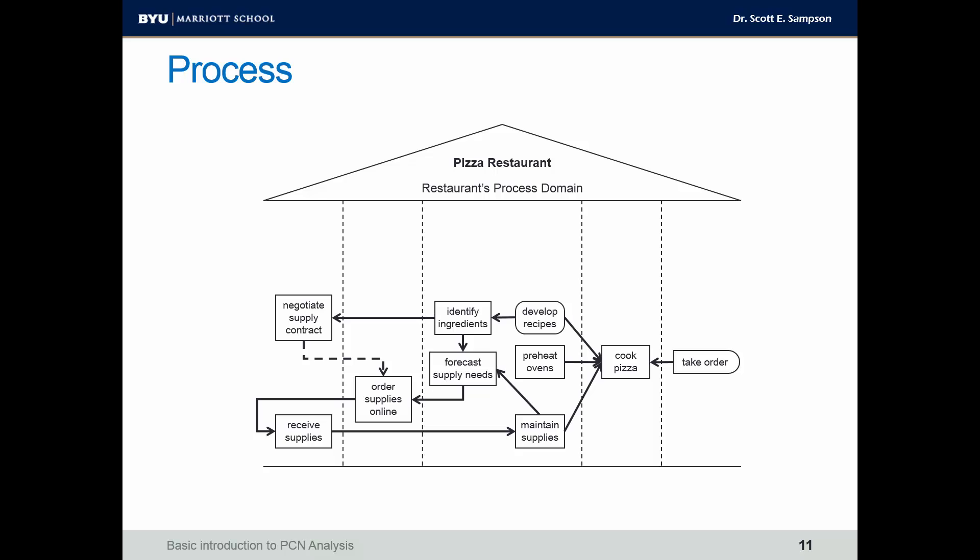The arrows in the diagram indicate dependency. When an arrow points from one step to another, it means the prior step must be accomplished before the subsequent step can be accomplished. Serving the pizza is the end of this part of the process — the restaurant process.